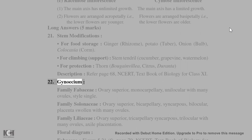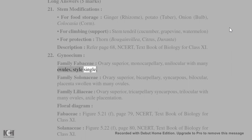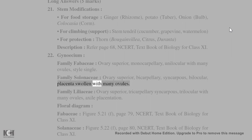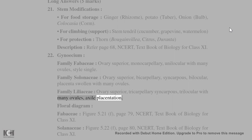22. Gynoecium — Family Fabaceae: ovary superior, monocarpellary, unilocular with many ovules, style single. Family Solanaceae: ovary superior, bicarpellary, syncarpous, bilocular, placenta swollen with many ovules. Family Liliaceae: ovary superior, tricarpellary, syncarpous, trilocular with many ovules, axile placentation.